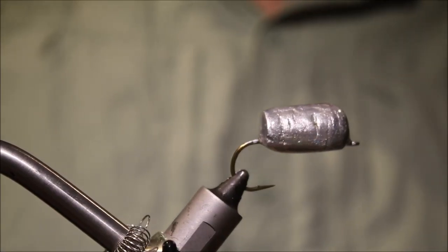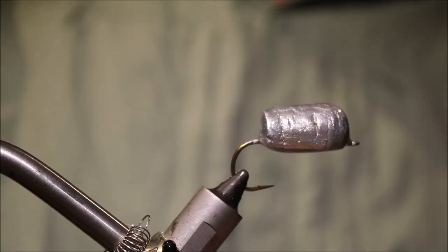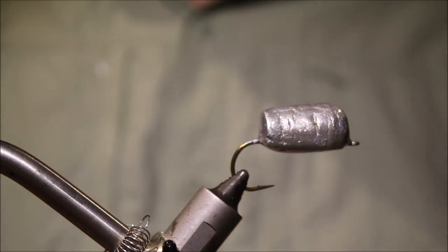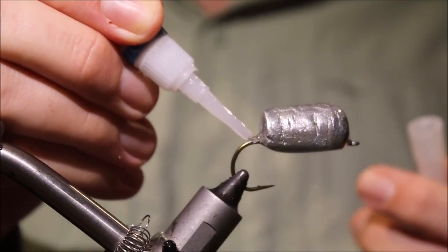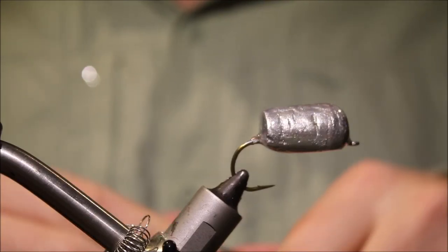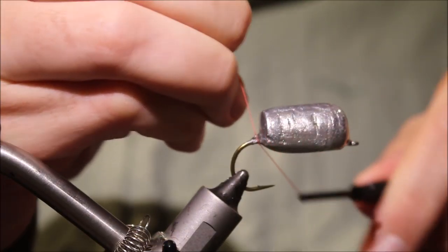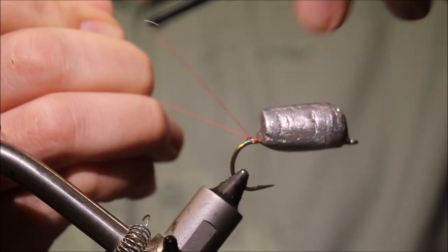I'm tying a red and silver version, you can tie them in different colors. But just to increase the durability, I've got to take another blob of superglue, attach it to the hook, just at the back of the body, and then I'll start my thread. It's just 140 denier, fluorescent red.